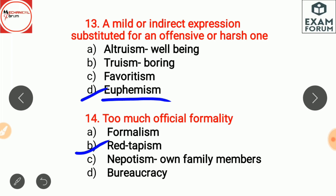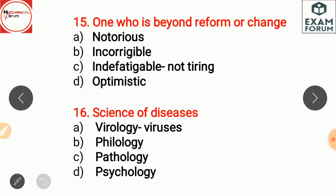One who is beyond reform or change is incorrigible — someone who cannot be corrected. Notorious means famous for something bad. Indefatigable means not getting tired of doing something. Optimistic means expecting good things to happen — an optimistic person is hopeful.